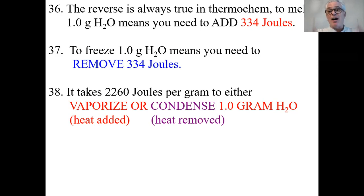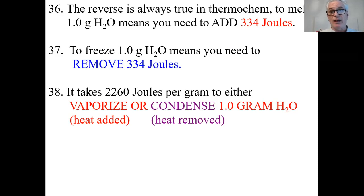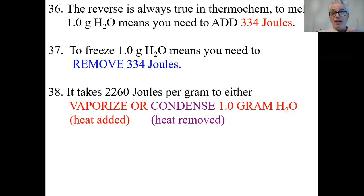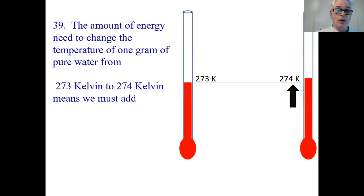It's like a rock: you carry a rock up a hill — it takes a certain amount of energy. When you throw the rock down, it releases that same energy. A big rock coming down the hill is dangerous because it releases all the energy it took to lift it. Same here: if it takes 2,260 joules to vaporize, then 2,260 joules will be released when it condenses. Thermochem is a two-way street.